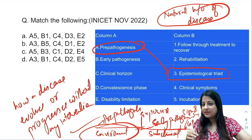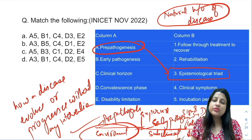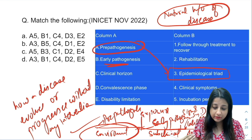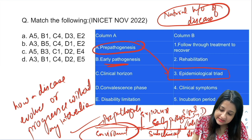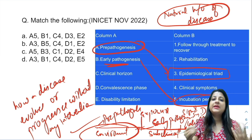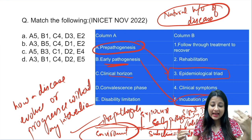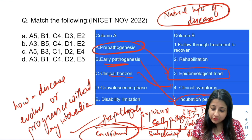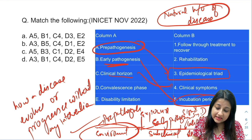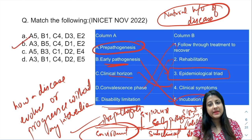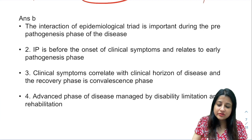In pre-pathogenesis, we are just exposed to the risk factors. Early pathogenesis — the agent has entered the body. Here the person can be in the incubation period; he has not developed signs and symptoms. Clinical horizon is when the person has gone on to develop signs and symptoms, so it matches with clinical symptoms. The convalescence phase happens once the disease has developed — follow-through treatment and recovery. Disability limitation matches with rehabilitation — that is option B.